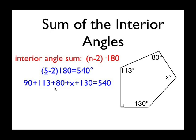90, 113, 80, and 130 have a subtotal of 413, and subtracting that from 540, we get x equals 127 degrees.